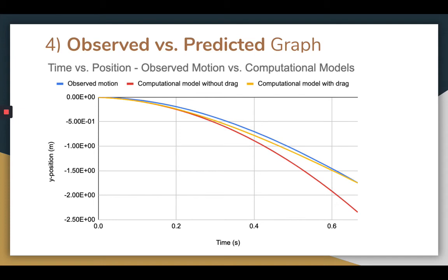Now let's compare the observed motion to the computational model with drag. In this model, I've chosen the proportionality constant such that the final positions predicted by these two models are equal. Once again, the model over predicts the box's position, except this time it does so in the middle time sectors. This can also be explained in terms of the drag force.